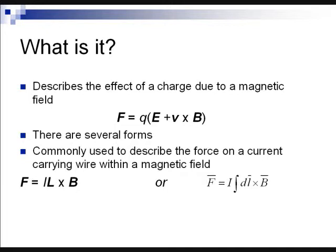The equation on the left shows the force is current times the vector of the wire length crossed with the magnetic field, or in integral form, i times the sum of many segments of wire cross with the magnetic field.